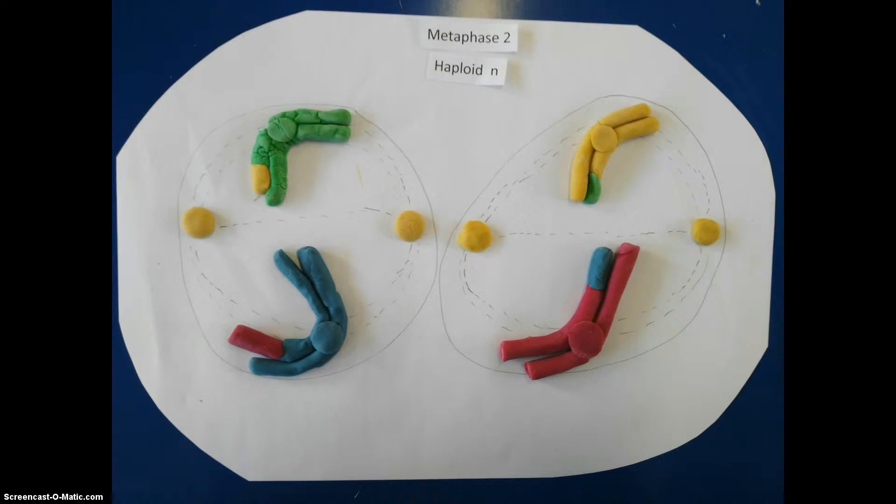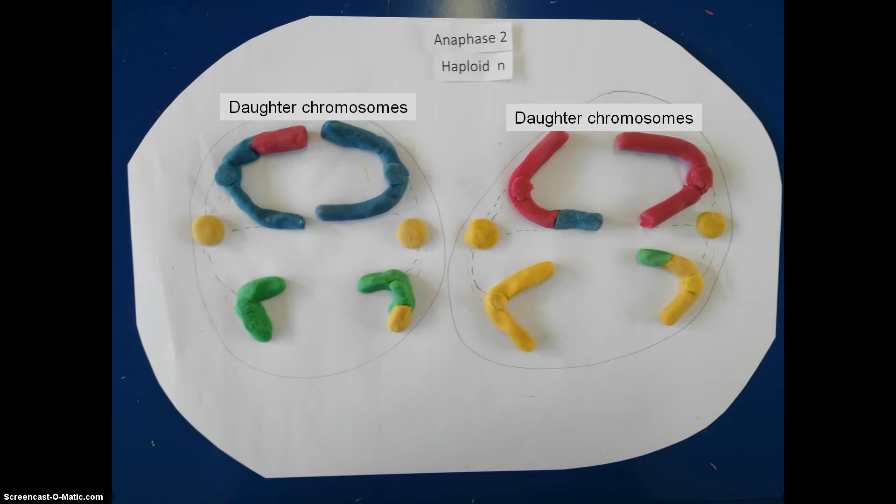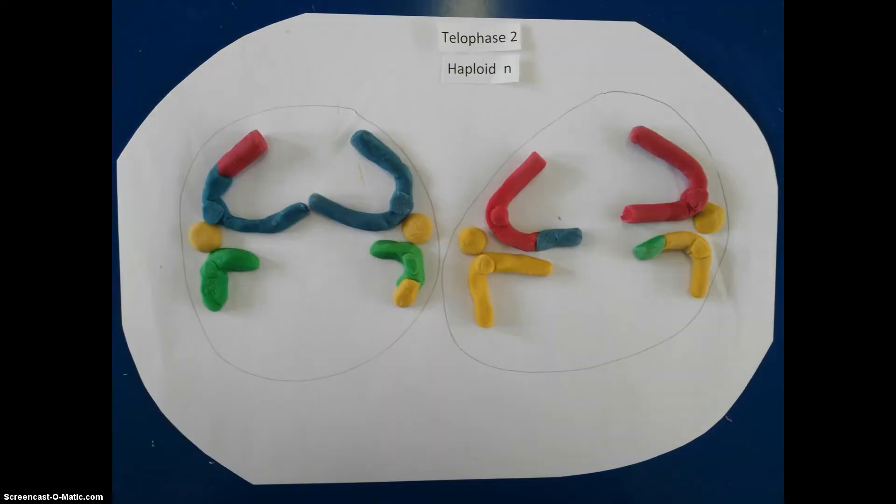In anaphase 2, the spindle fibers start to contract. This causes the centromeres to split and the individual chromatids are now called daughter chromosomes. They are pulled to the opposite poles of each cell.